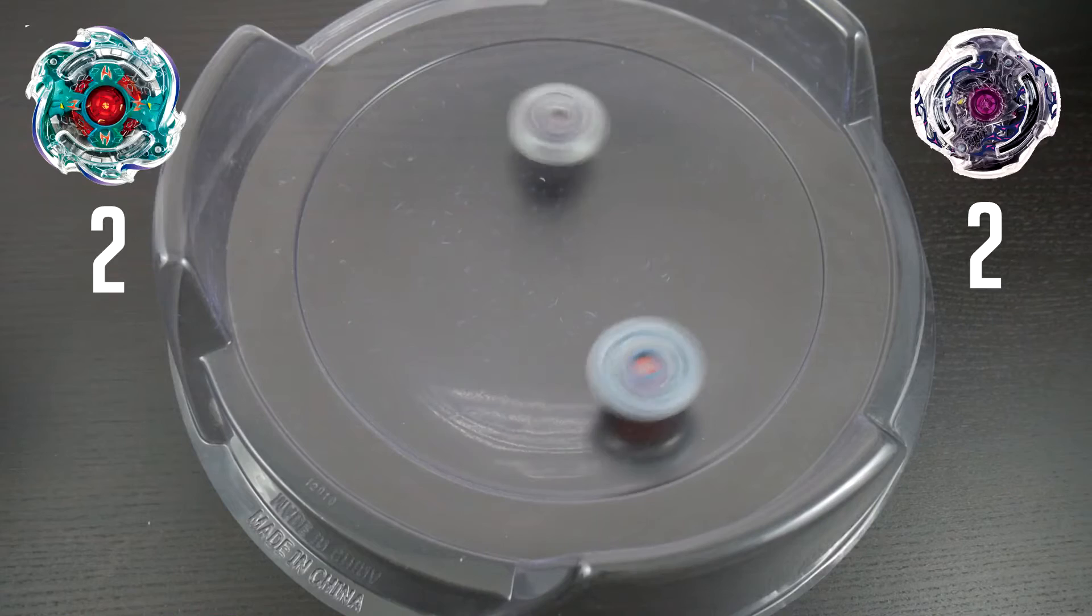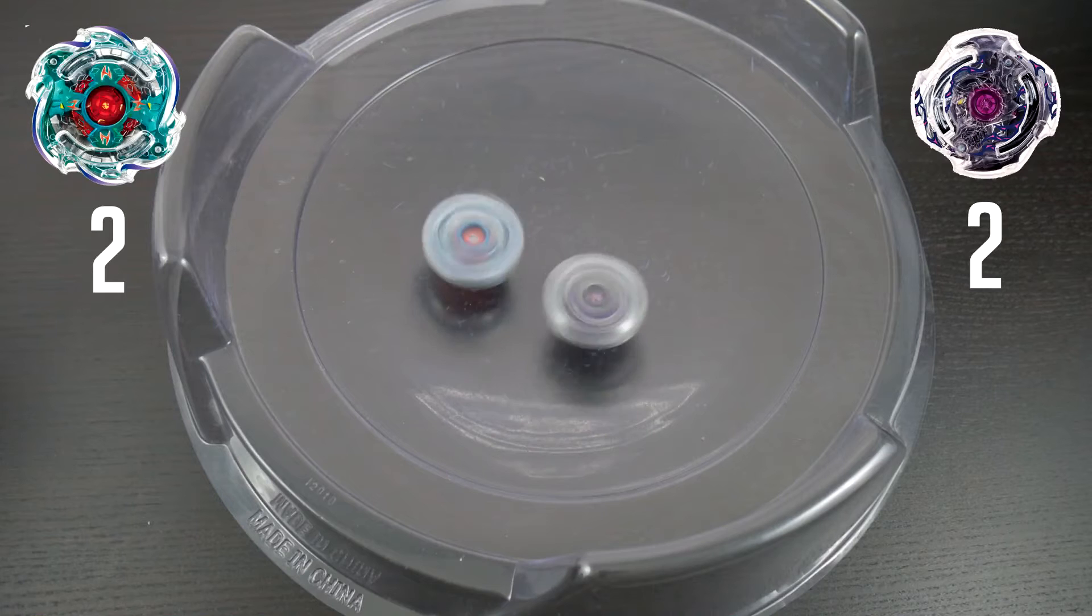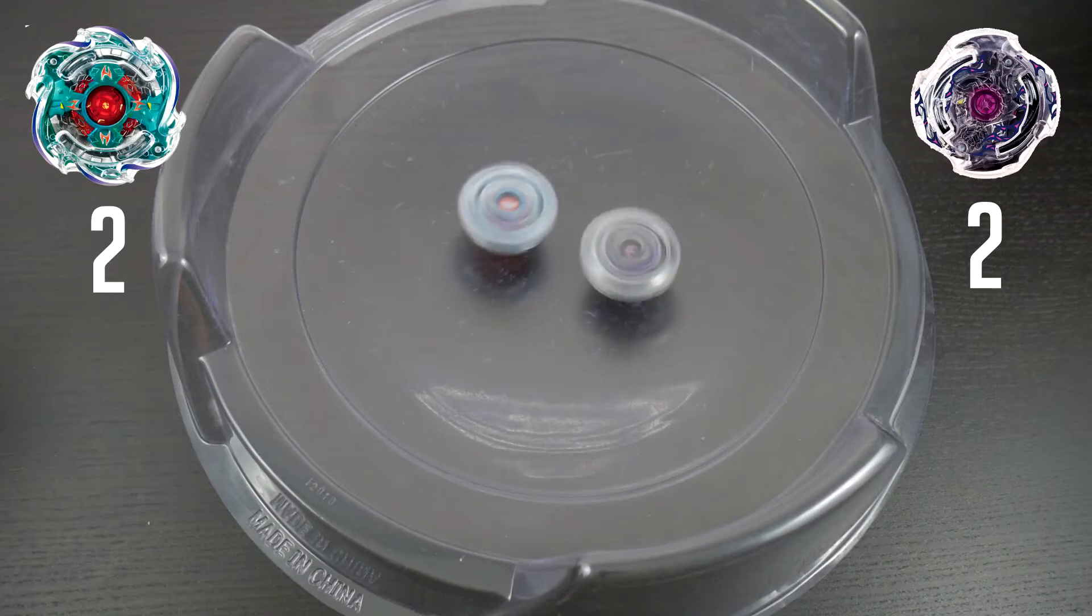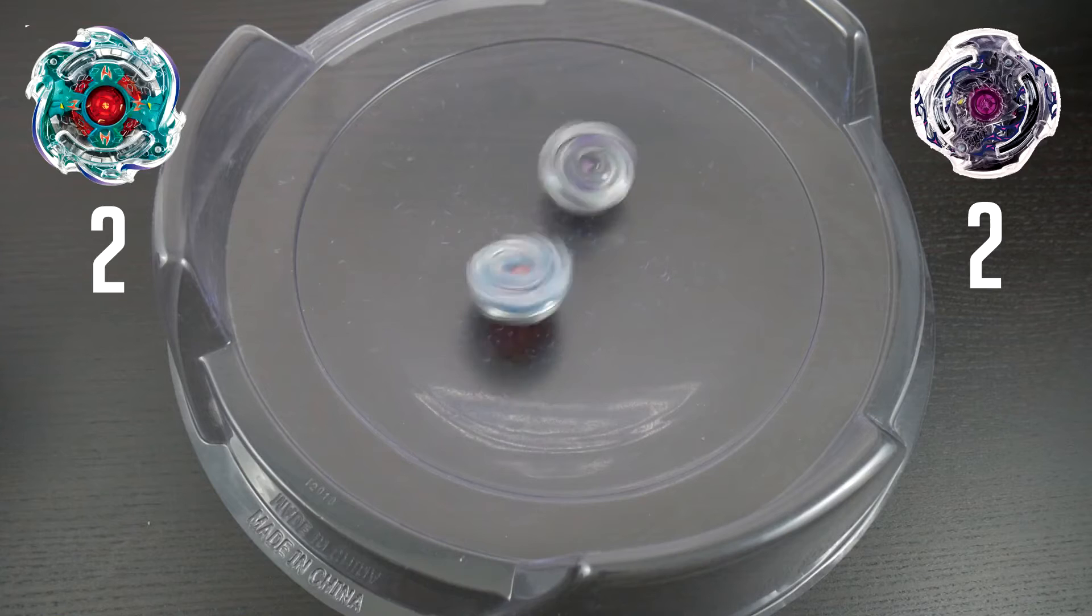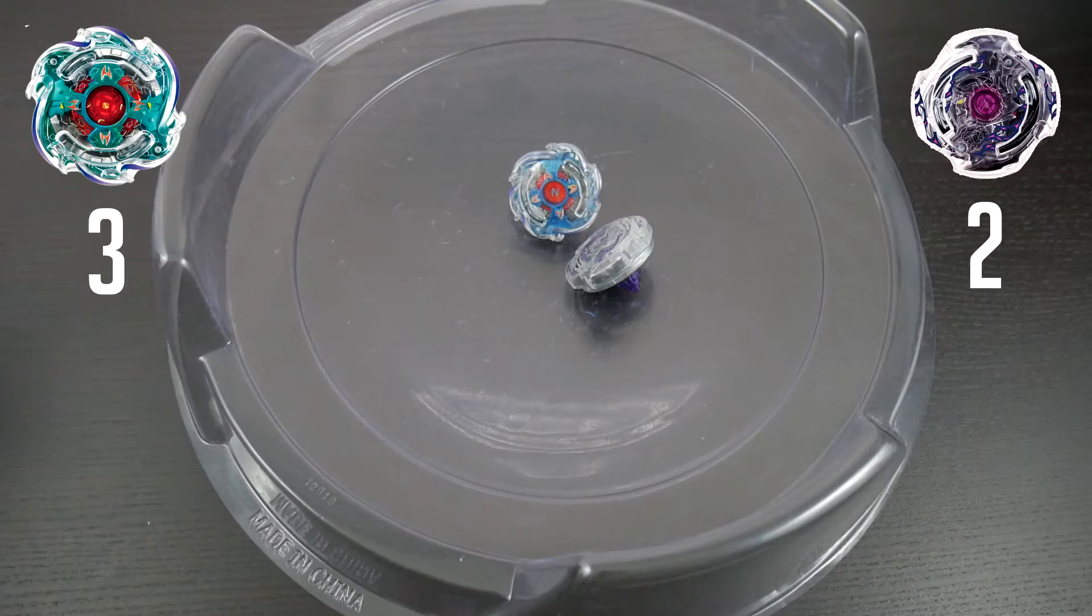Oh, this is not looking good for Death Scyther at all. If this goes to a sleep out, Death Scyther will lose. But wait, Neptune is wobbling. Who knows? It is a photo finish and Neptune pulls out the win. That is a result that I did not expect at all. Neptune was able to pull the win.